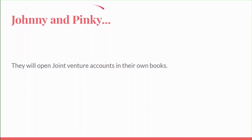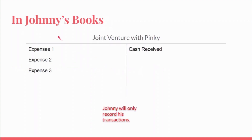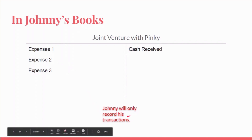Let's say there is a joint venture between two owners, Johnny and Pinky. They will open joint venture accounts in their own books. In Johnny's books of accounting, he will make a joint venture account — the title will be 'Joint Venture with Pinky.' Cash received, like incomes, appear on the credit side, and all expenses appear on the debit side. Johnny will only record his own transactions — his part of the joint venture.